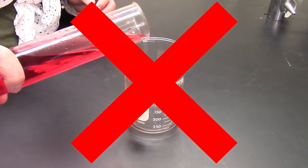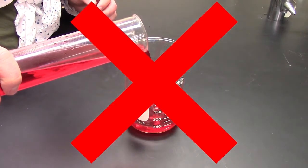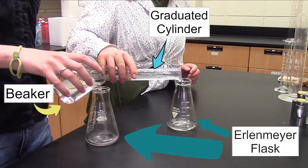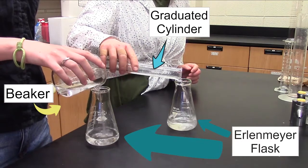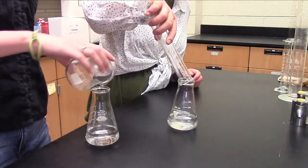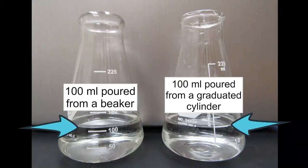Never measure liquid in a beaker. It isn't meant to be used like that and is only good for mixing solutions. Beakers have lines on the side to show the approximate volume of the container, but in comparison to a graduated cylinder, a graduated cylinder is much more precise at measuring a specific volume than a beaker.